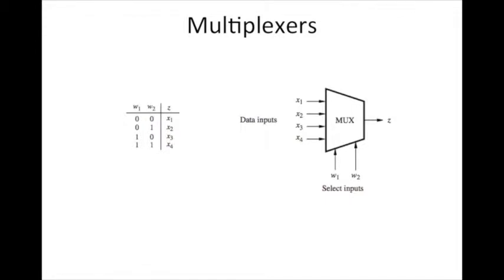So let's take a look at what that means. Shown here is an example of a simple multiplexer or mux circuit. It has four inputs x1, x2, x3, and x4 and two select bits w1 and w2.